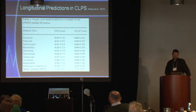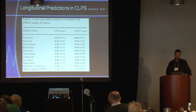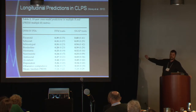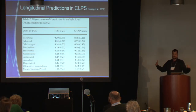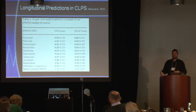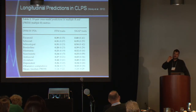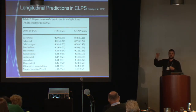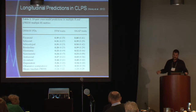I'll skip this slide for time. Basically, it shows that you can use trait models to predict personality disorder status prospectively. There's a longitudinal relationship in terms of personality traits today predicting how many personality disorder symptoms a patient might have 10 years later.